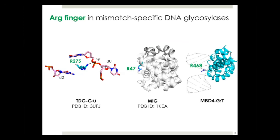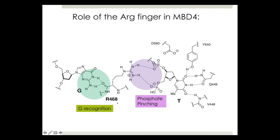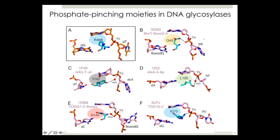What is the role of this arginine finger? We know it involves phosphate pinching that stabilizes flipped-out thymine, and also involves guanine recognition. But guanine recognition and phosphate pinching can be done by other amino acid residues such as glutamine, leucine, tyrosine, and asparagine observed in other DNA glycosylases. Why do mismatch-specific DNA glycosylases specifically use an arginine finger in processing GT mismatches? That was our question.